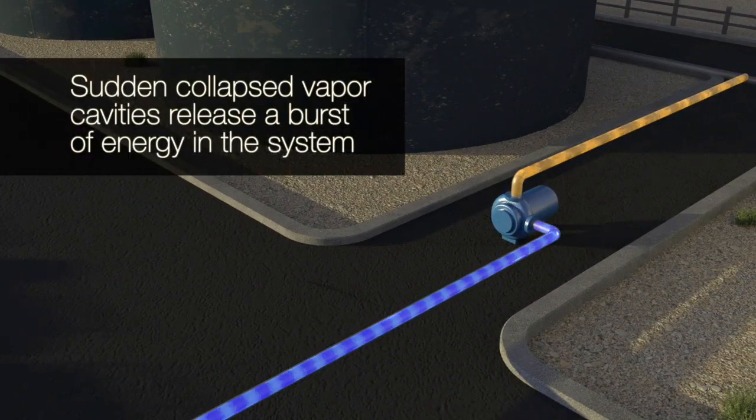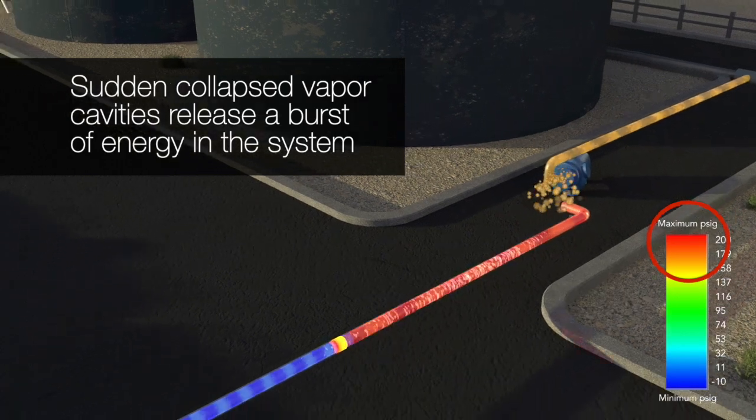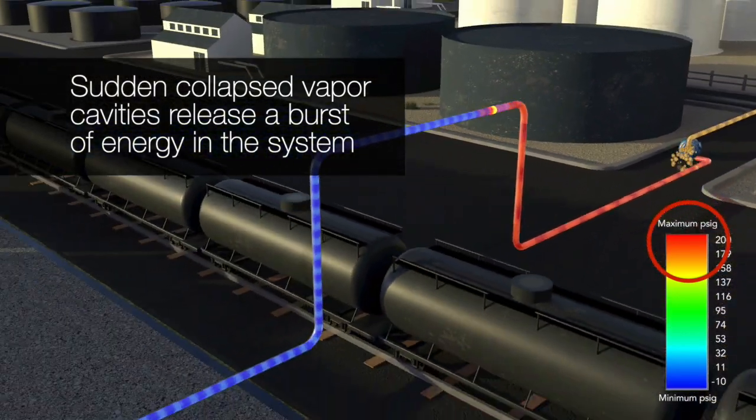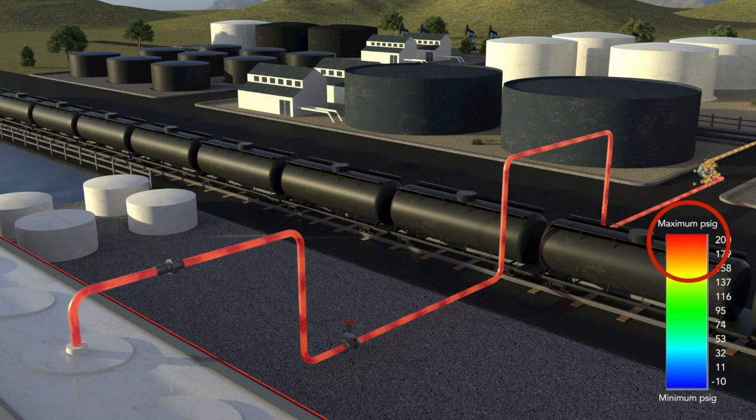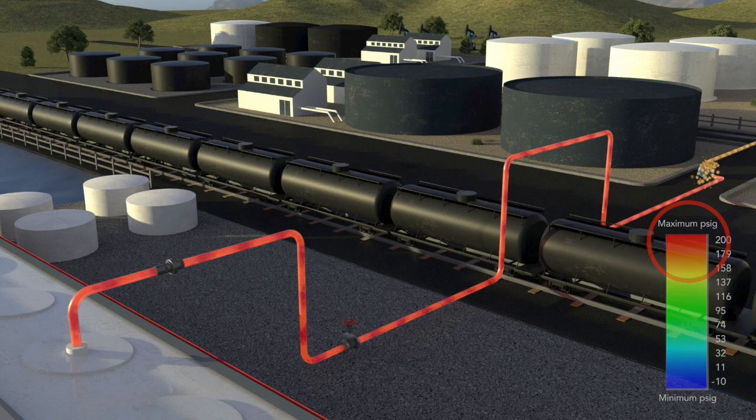Sudden collapsed vapor cavities release a burst of energy in the system and cause new extreme high-pressure transient waves. With nowhere to go, the energy wave is emitted throughout the system, hammering all junctions along its path.